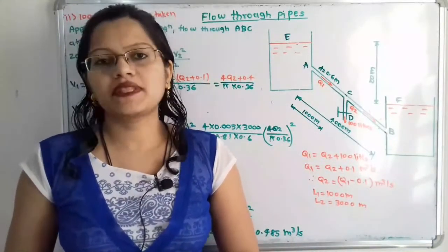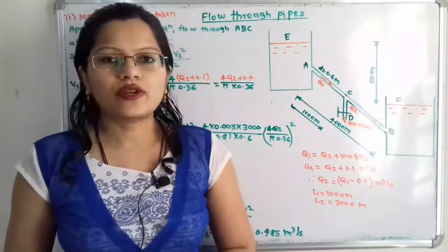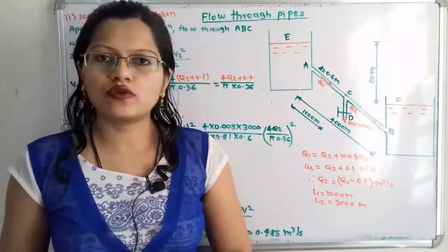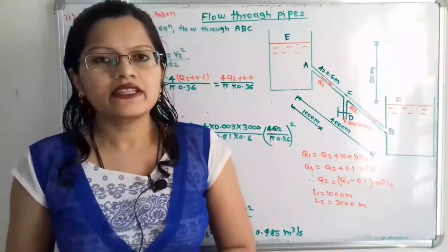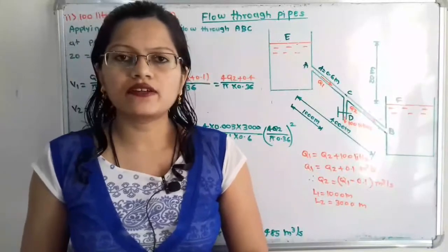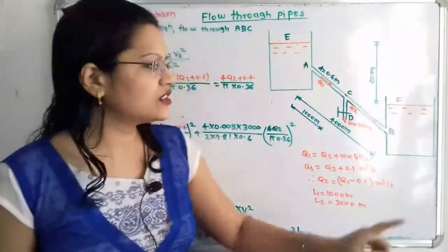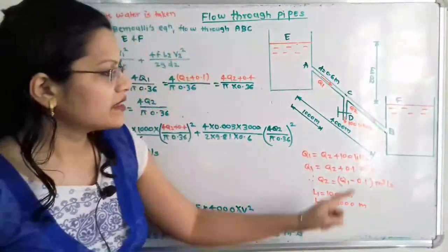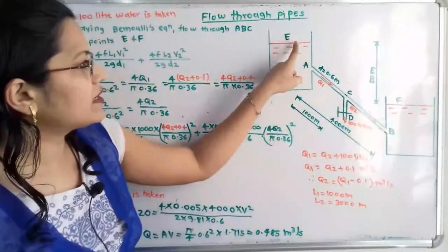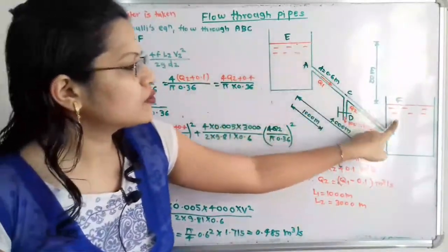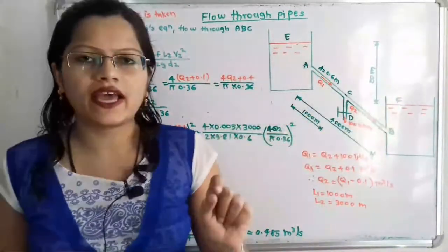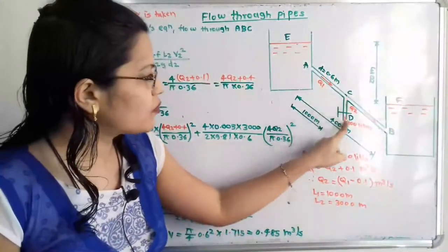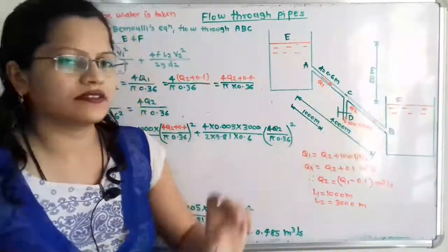Hello friends, this is Priyanka. Today we are going to solve a problem on flow through pipes. We are going to find out what is the discharge to the lower reservoir when this main pipe is connected in between two reservoirs and water is taken from a small pipe of 100 liters per second.